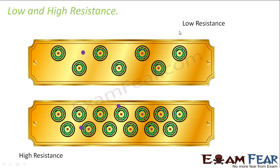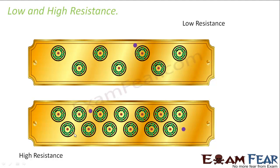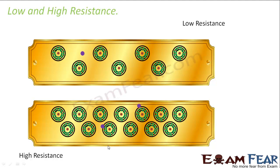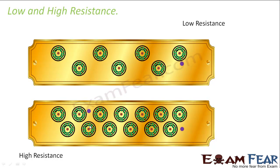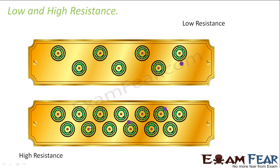Now if the resistance is less, the amount of current flowing will be more. Whereas in this other case, the free electron is getting hit or colliding with so many atoms. As a result, the resistance in this case is more. So wherever you have more resistance, the current flow will be less, and vice versa.